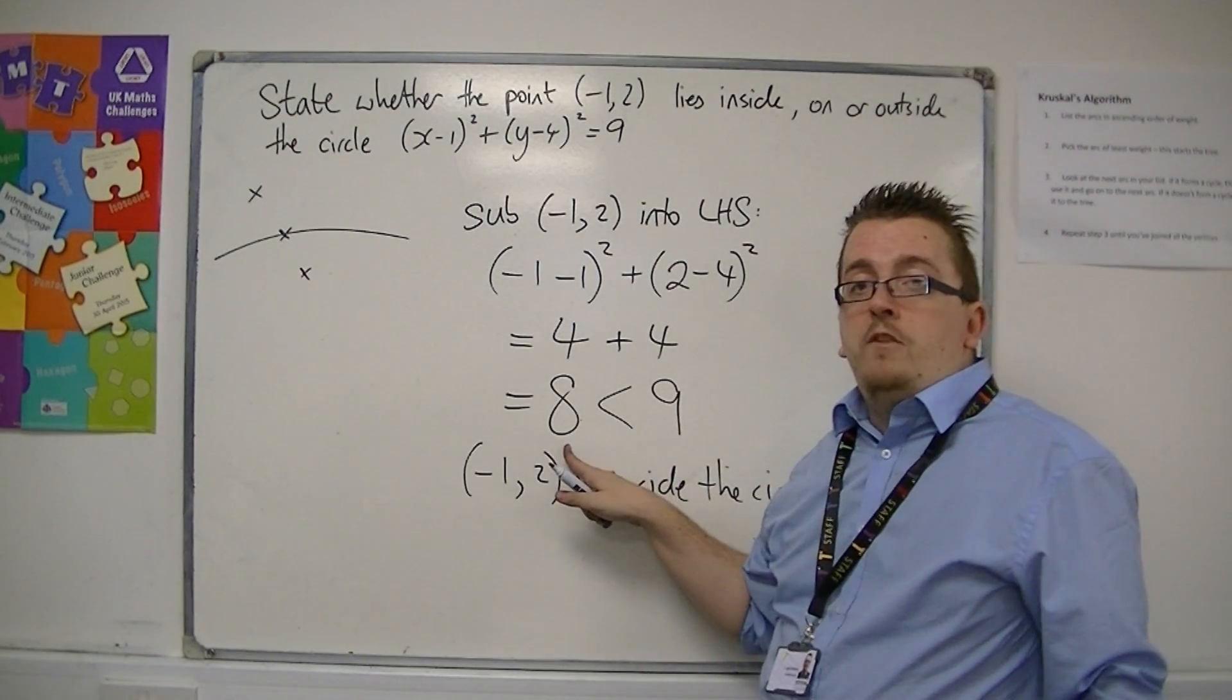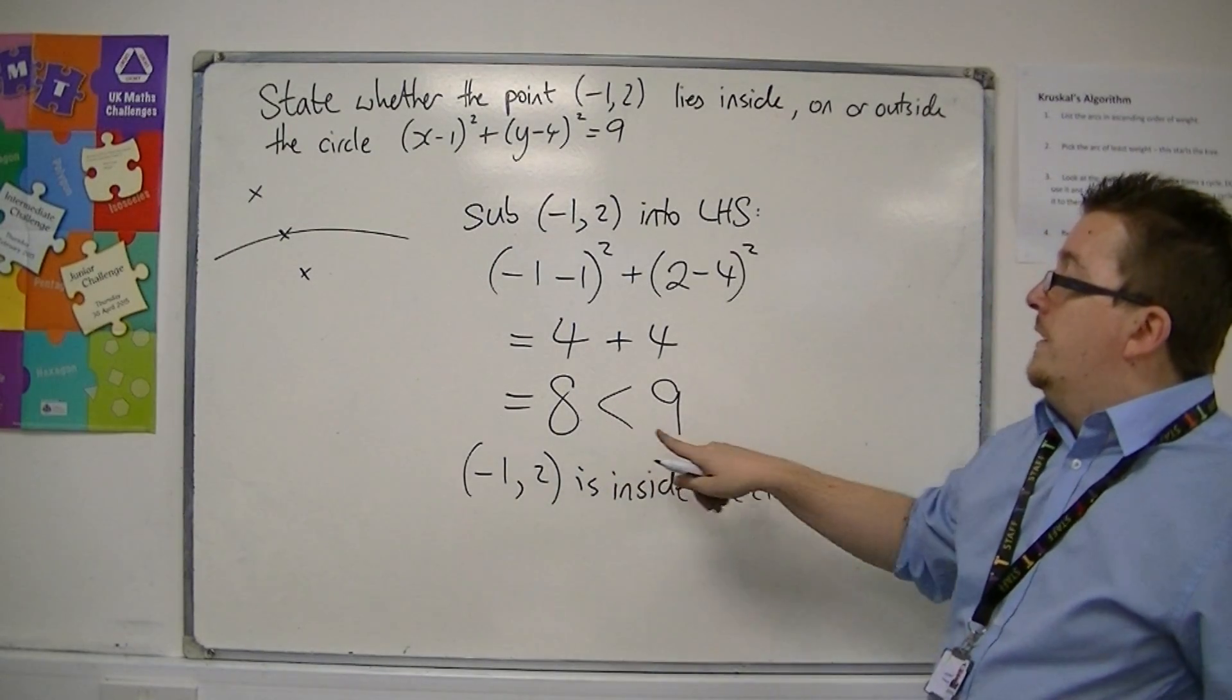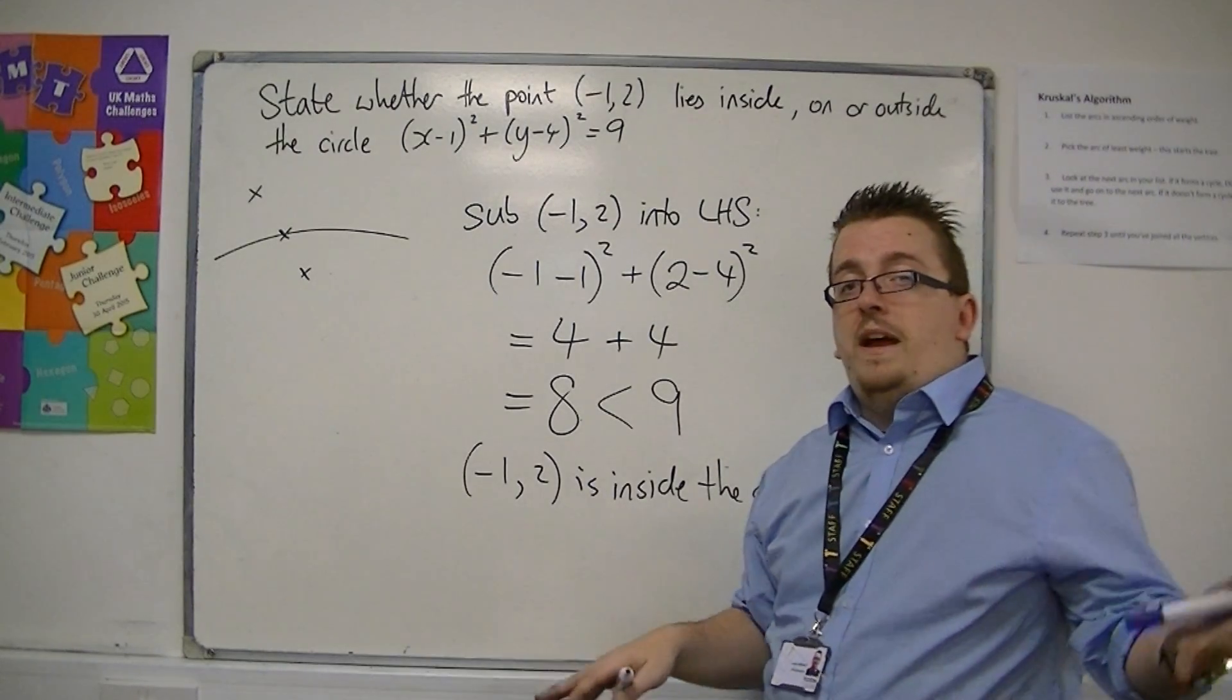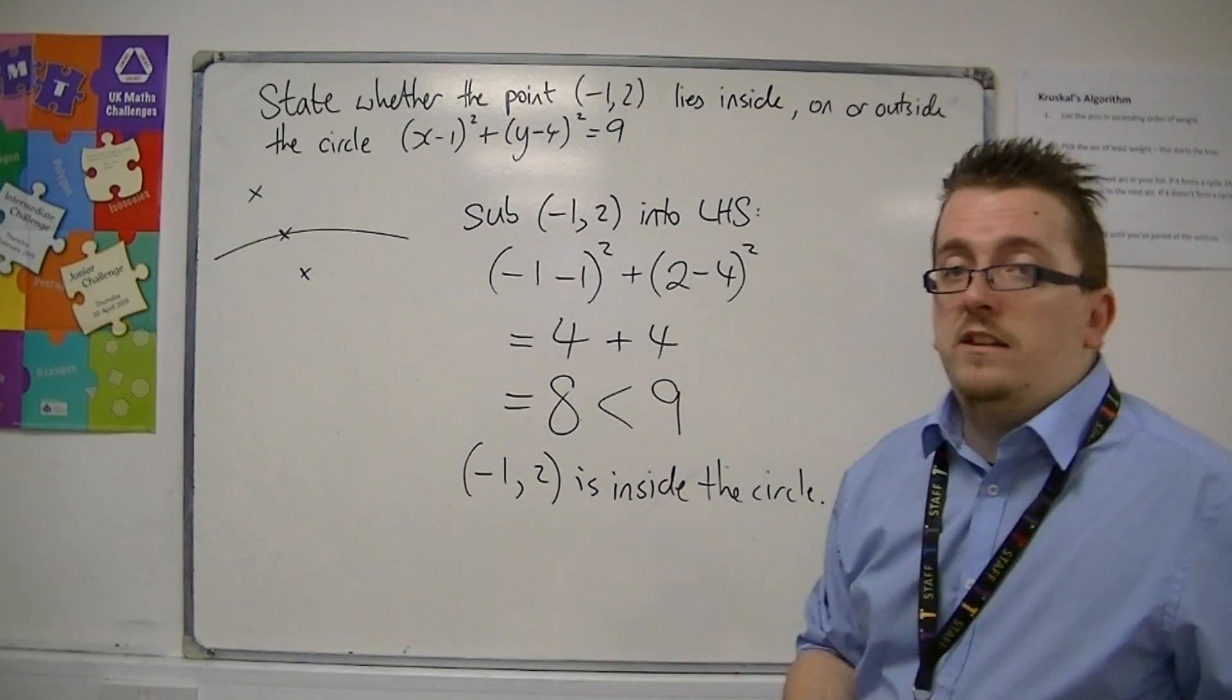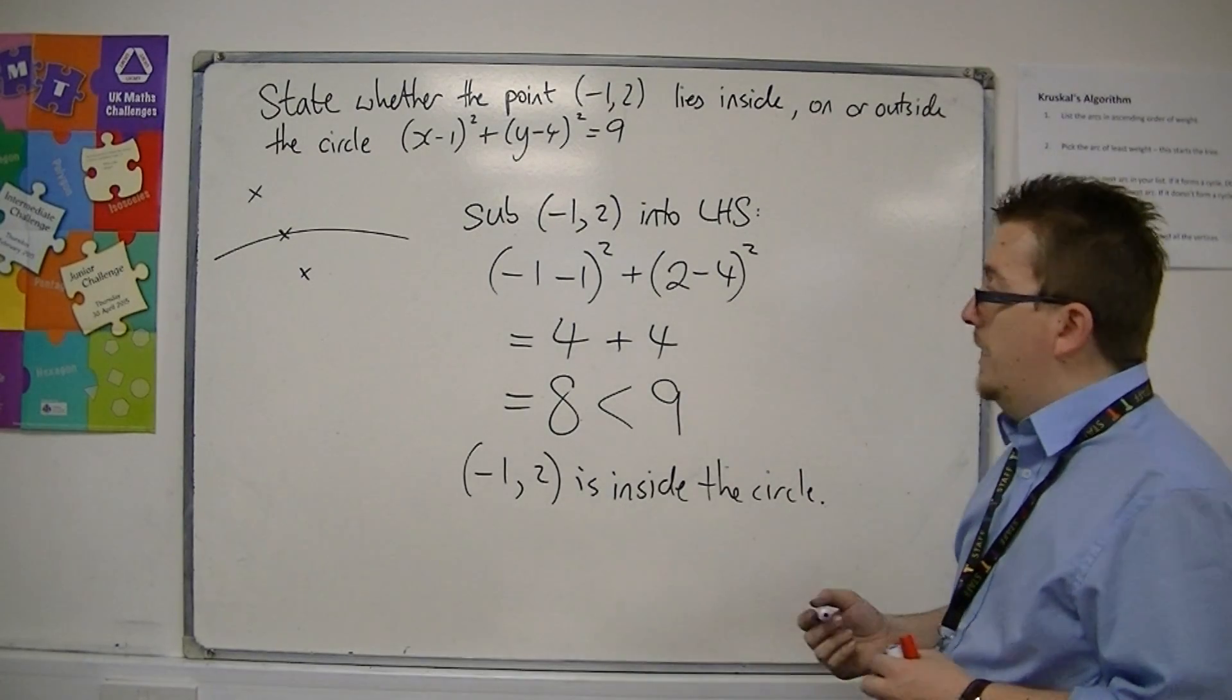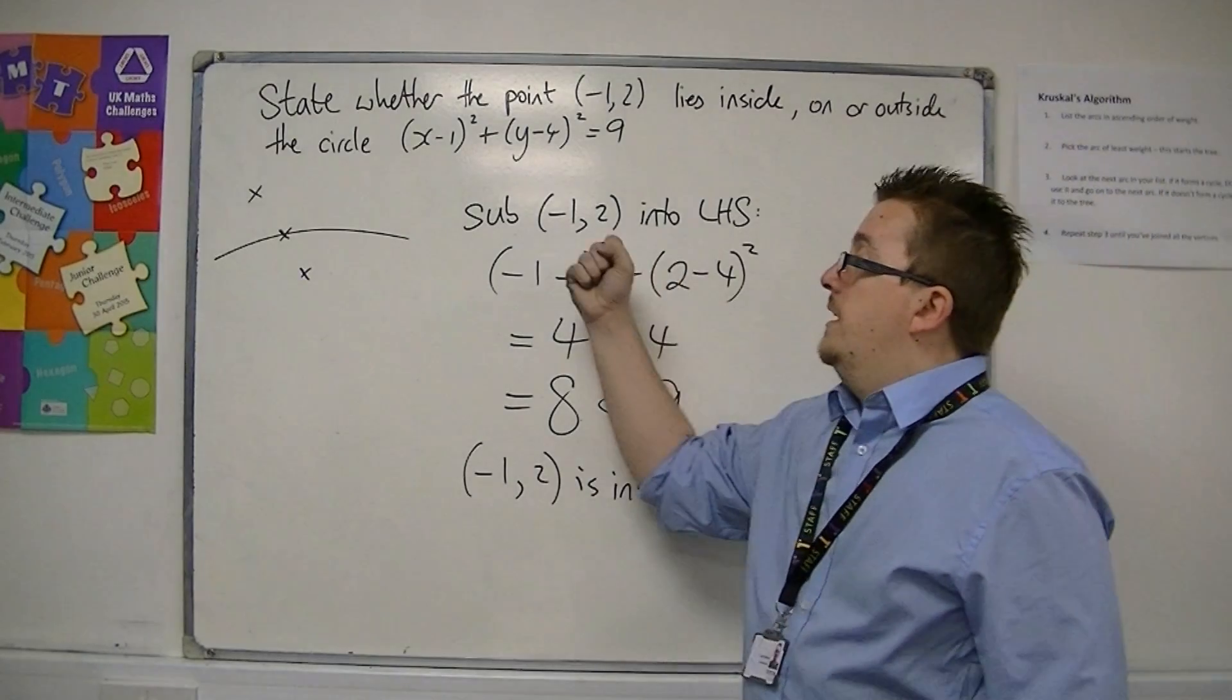When the radius is 3, that means we must be inside the circle because it's not quite at the boundary yet. And that's how you can solve this type of problem using substitution.